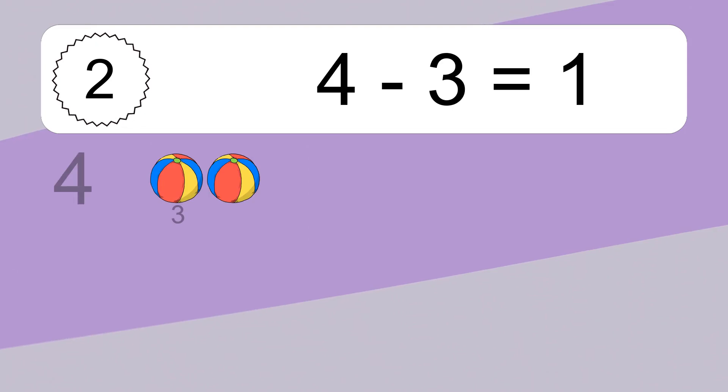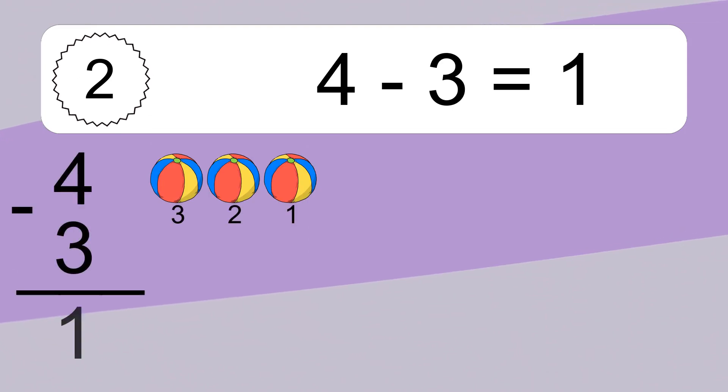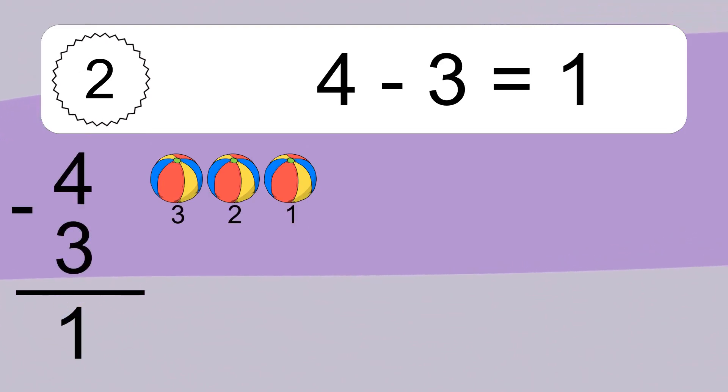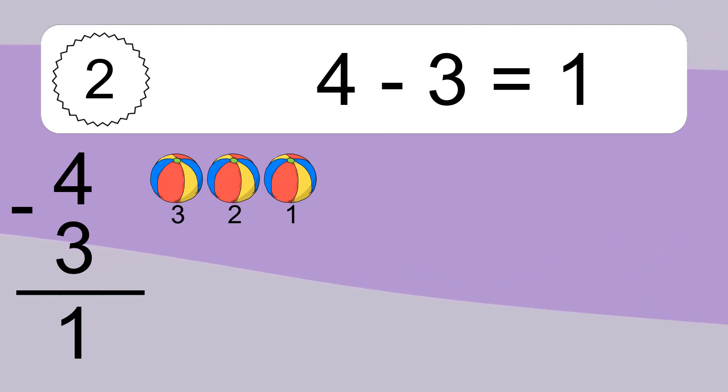4 minus 3 equals what? 4 minus 3 equals 1. Let's count it: 3, 2, 1.